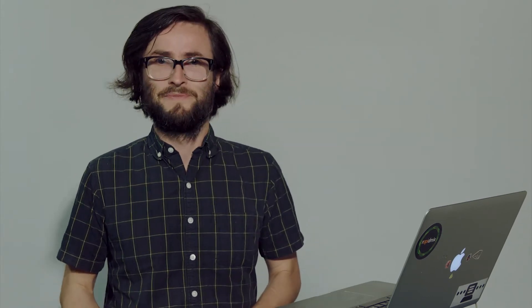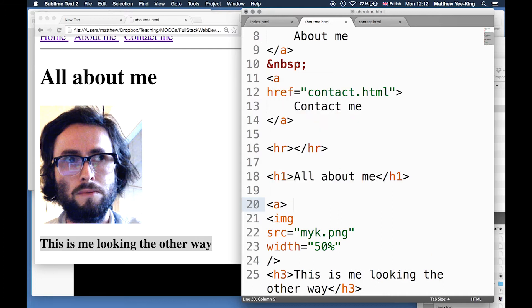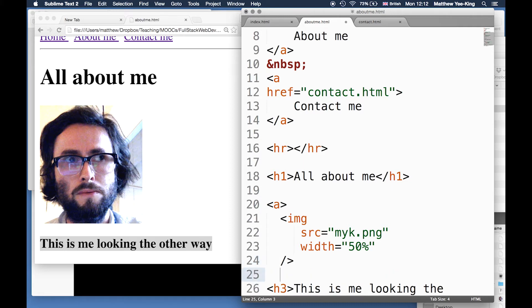We can actually do something clever - we can turn an image into a link. I could put an a tag around the image. So there's my image tag and then end of a. I've now turned the image into a link. Of course I need to tell it where to go - maybe it could just go straight to the image file itself.